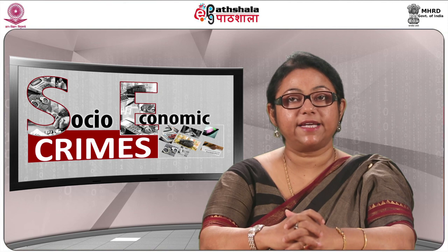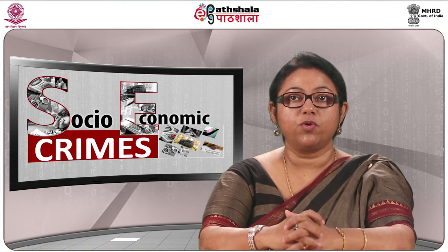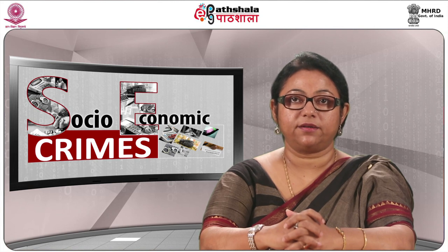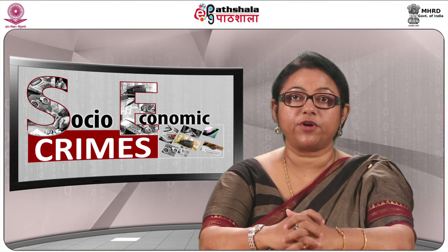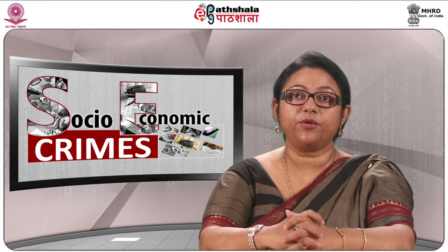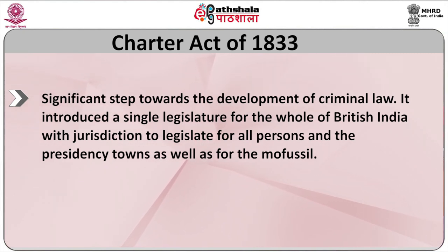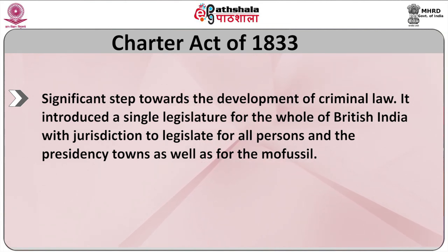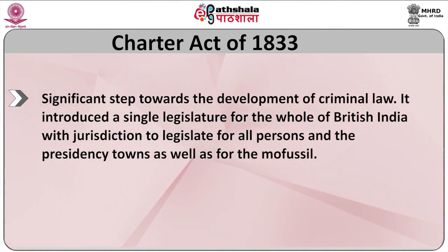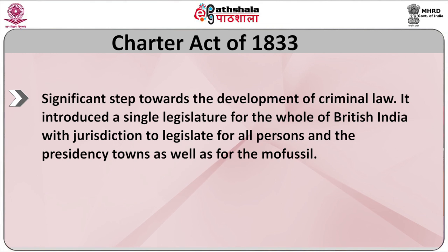When Punjab was annexed in 1844, a short code was drawn up for that province as well. In the provinces of Madras, Bengal, Bihar, Orissa, and other territories acquired by the British, the criminal law as introduced by the regulations was enforced. The Charter Act of 1833 came as a significant step towards the development of criminal law. It introduced a single legislature for the whole of British India with jurisdiction to legislate for all persons — in the presidency towns as well as in the mofussil.